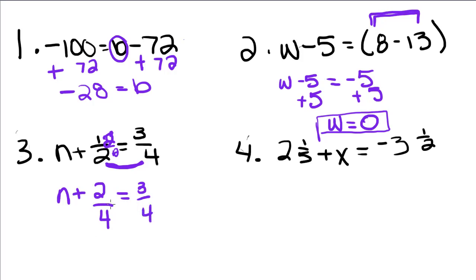So you'll get 2 fourths is equal to 3 fourths. So in order to undo this addition, I'm going to subtract the 2 fourths over, and you get n is equal to 1 fourth.